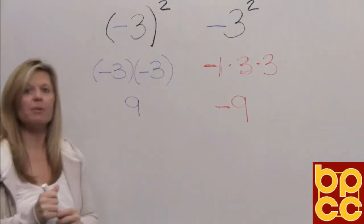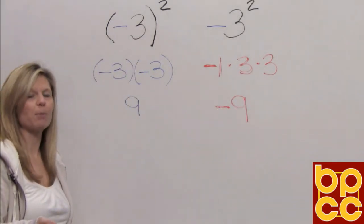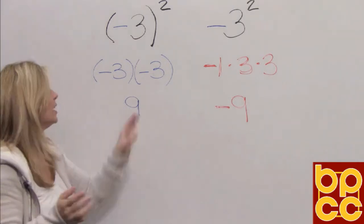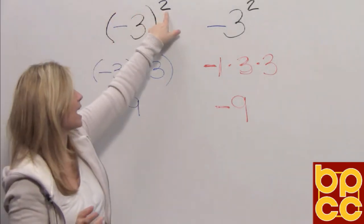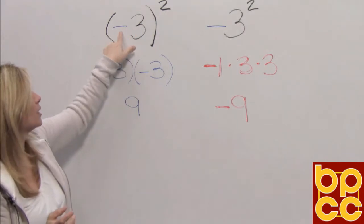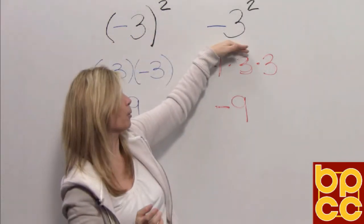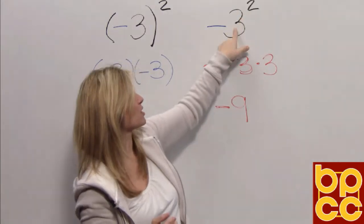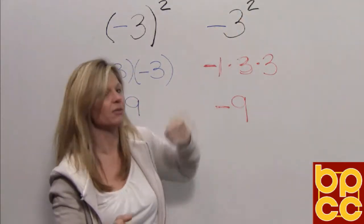So you have to be very careful when working with exponents to pay attention to parentheses. If everything is in the parentheses, that exponent belongs to both the symbol and the number. If there are no parentheses, then the exponent just belongs to that number and the symbol stays in front.